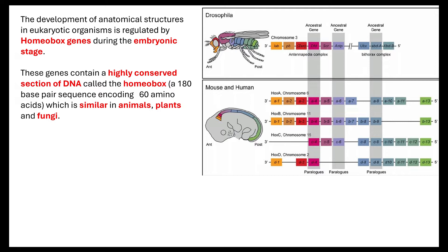This homeobox is a 180 base pair sequence of DNA, which encodes for 60 amino acids. These 180 base pair sequences are really similar in animals, in plants and fungi, and that's why they are highly conserved.